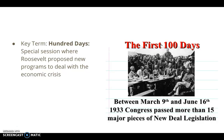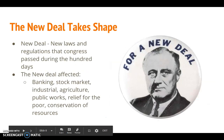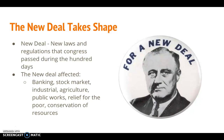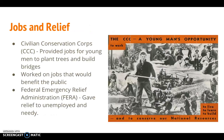The first 100 days of his presidency was a special session where Roosevelt proposed new programs to deal with the economic crisis. Between March 9th and June 16th of 1933, Congress passed more than 15 major pieces of legislation that he called the New Deal. The New Deal affected banking, stock markets, industry, agriculture, public works, relief for the poor, and conservation of resources — his comprehensive solution to the Great Depression.